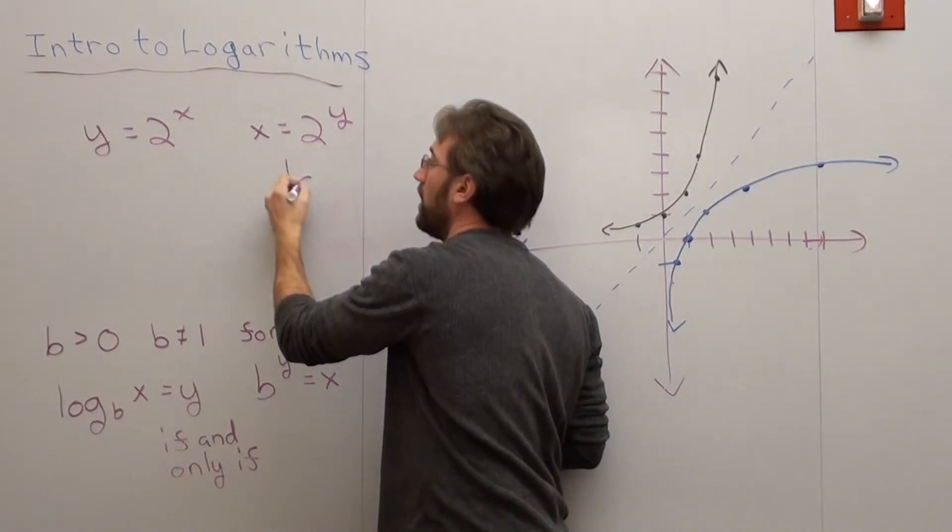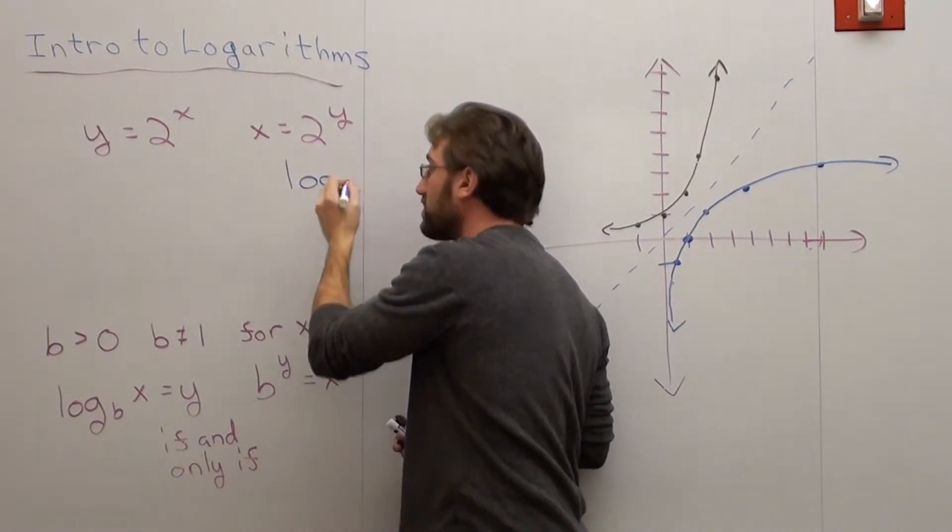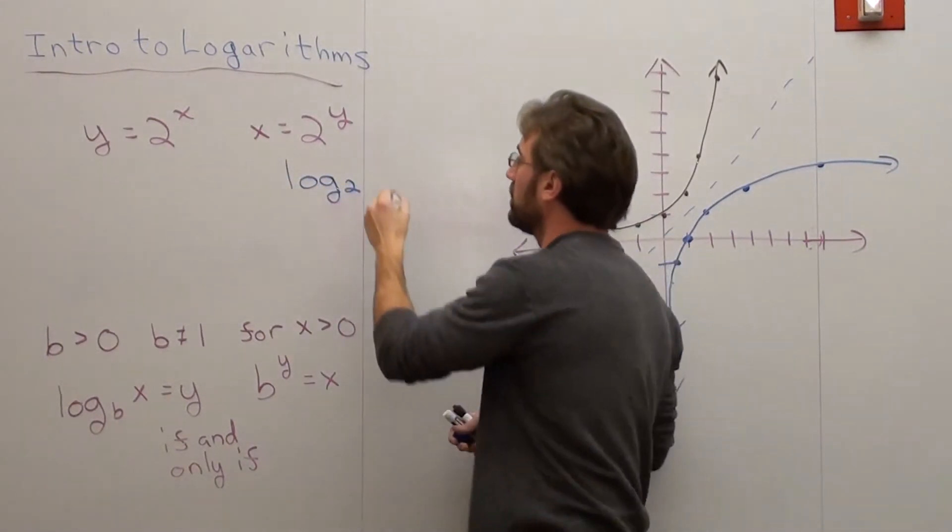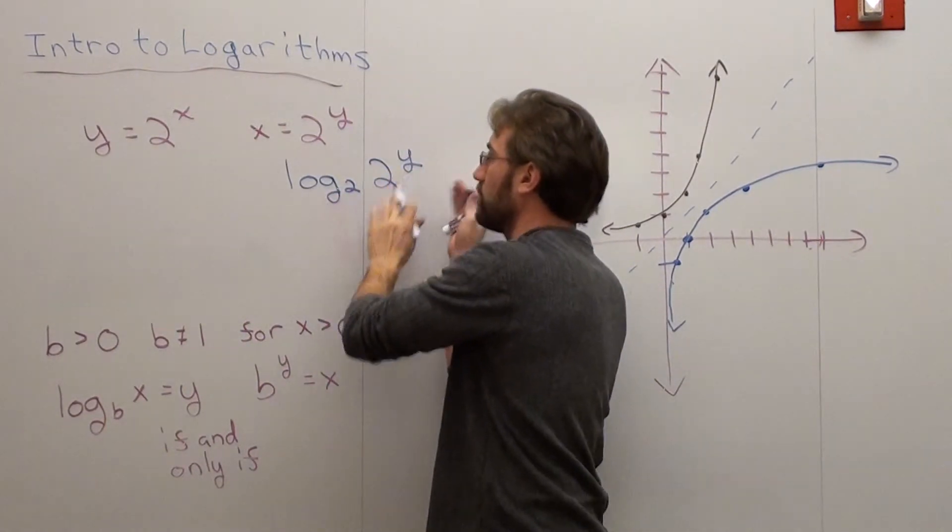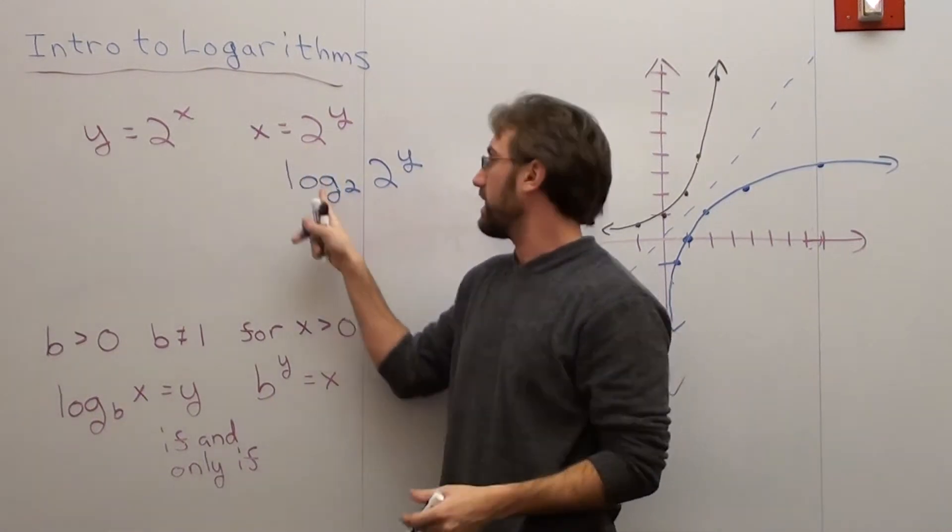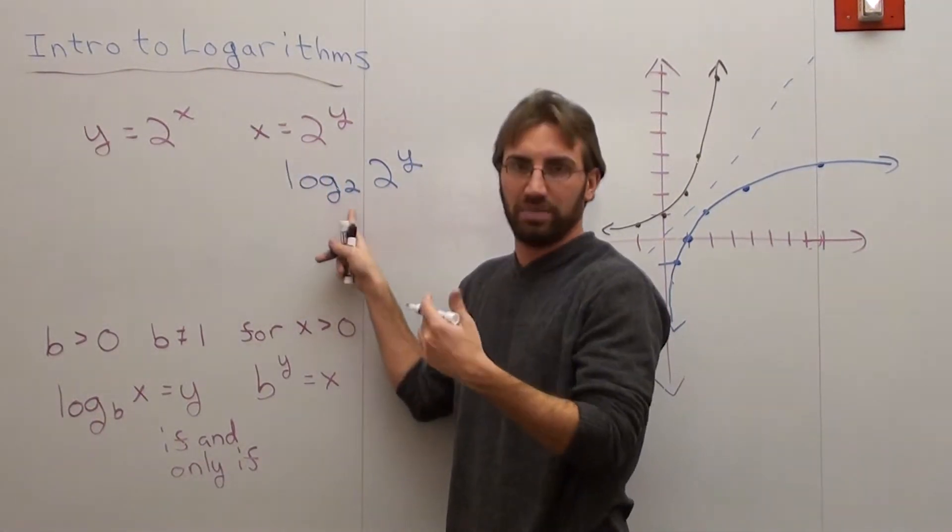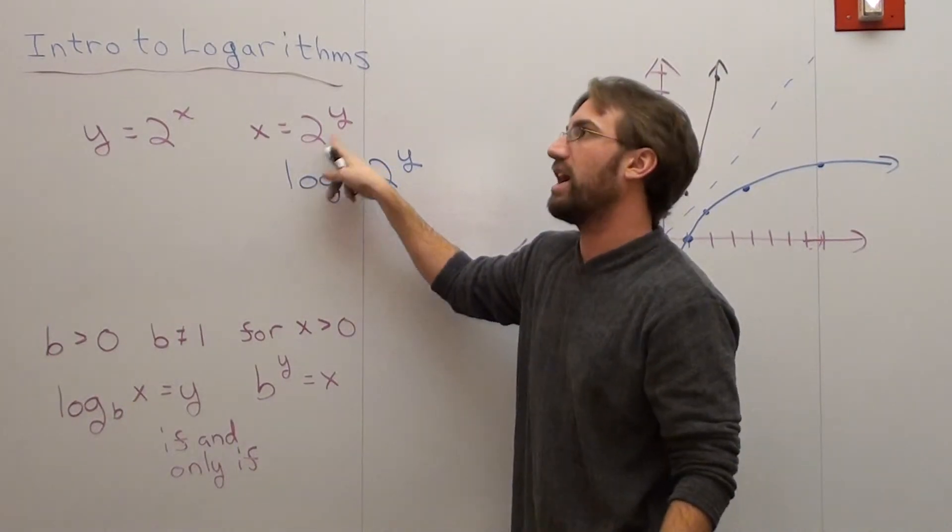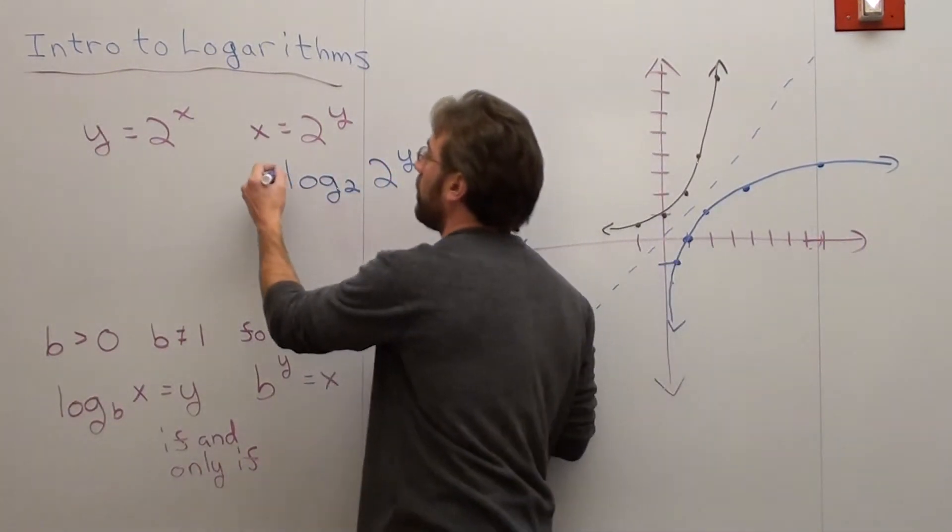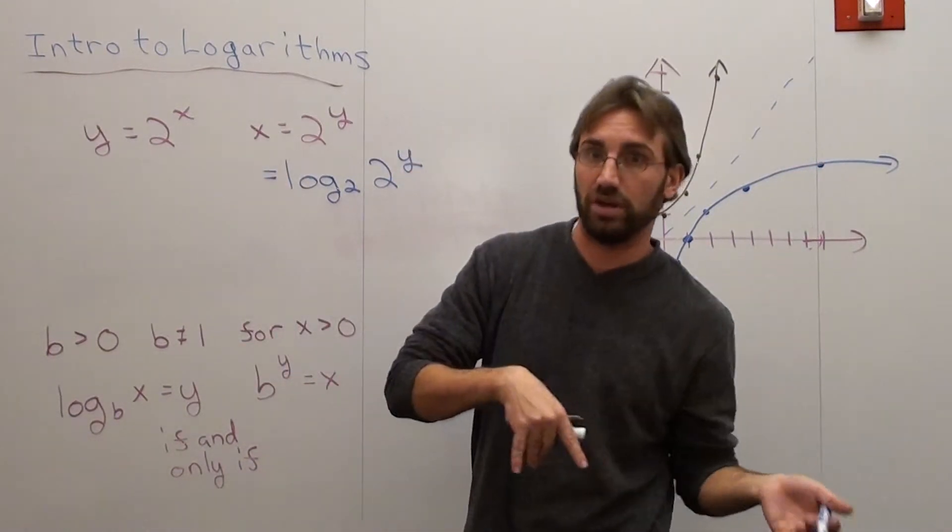You take the log of base 2 to 2 to the y. So you put a log of base 2 in front of 2 to the y. Whatever this base is, is the base of the log. So if this were 3 to the y, it would be log of base 3. If this was 5 to the y, it would be log of base 5. But what you do on one side of the equation, you better do on the other.